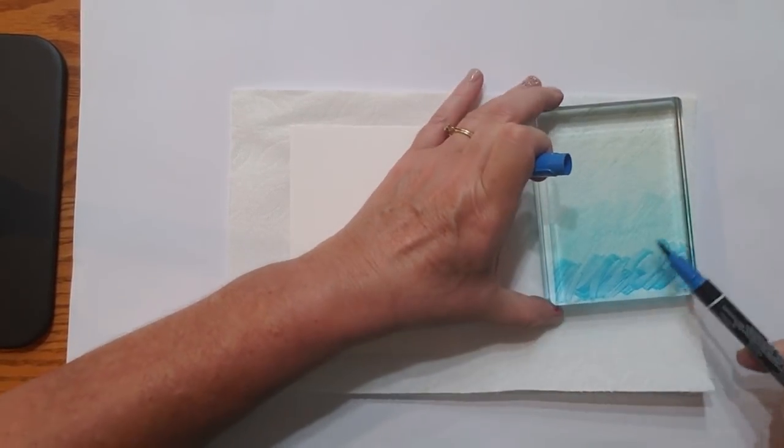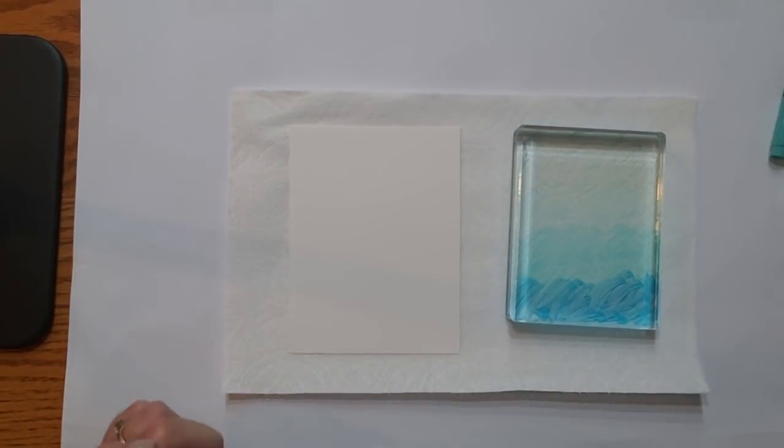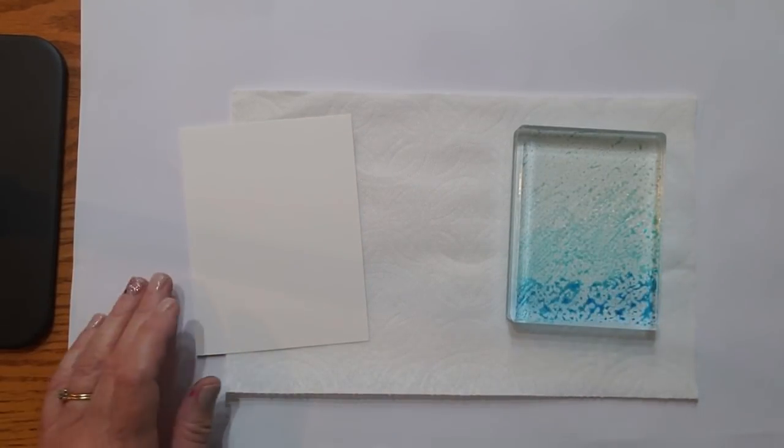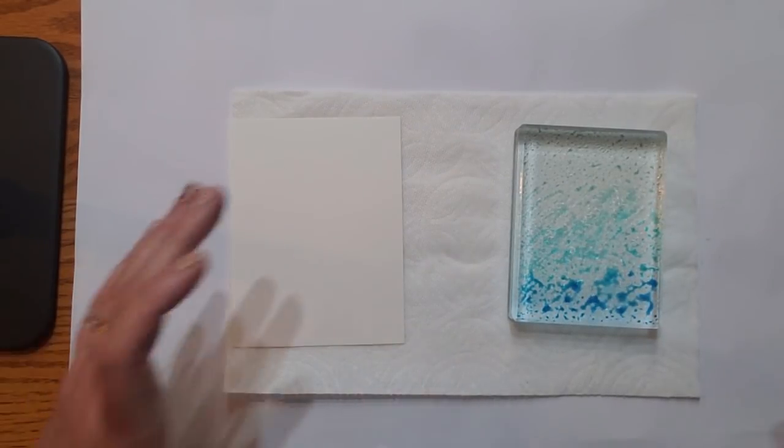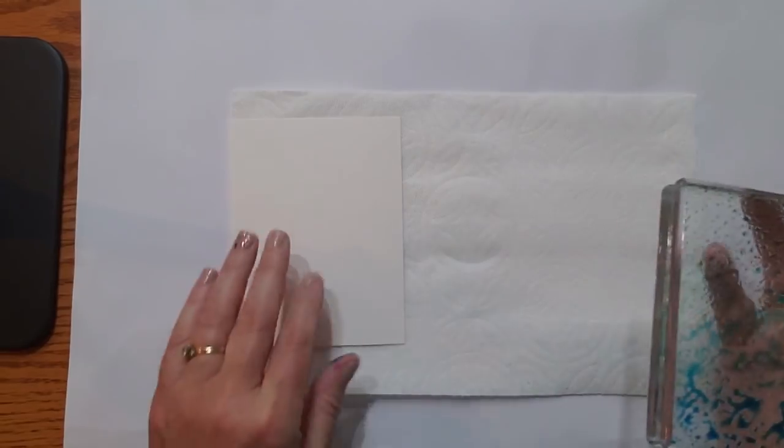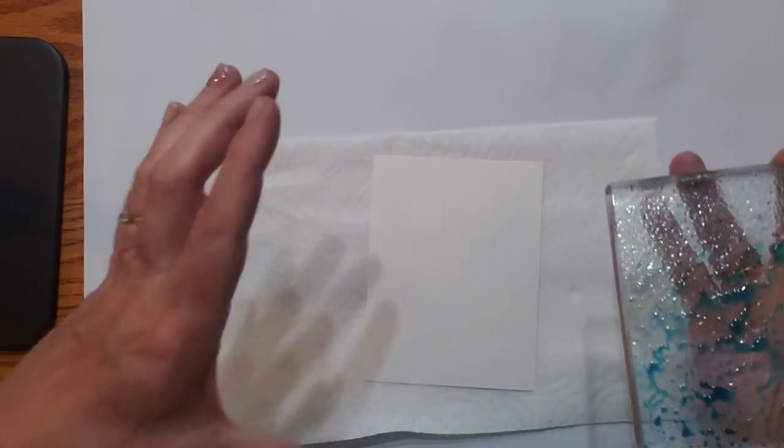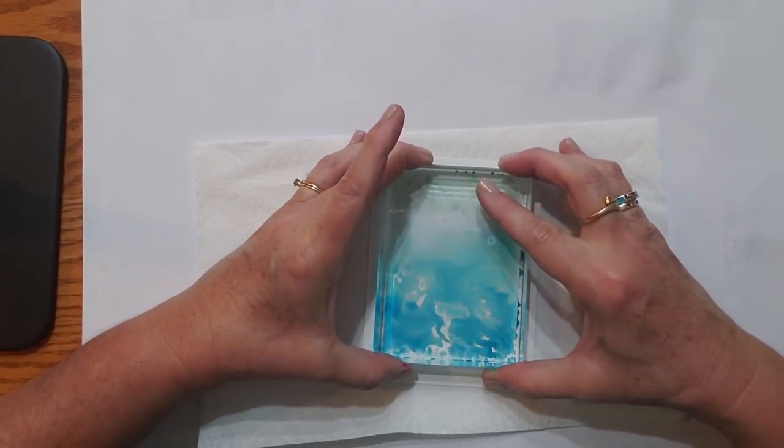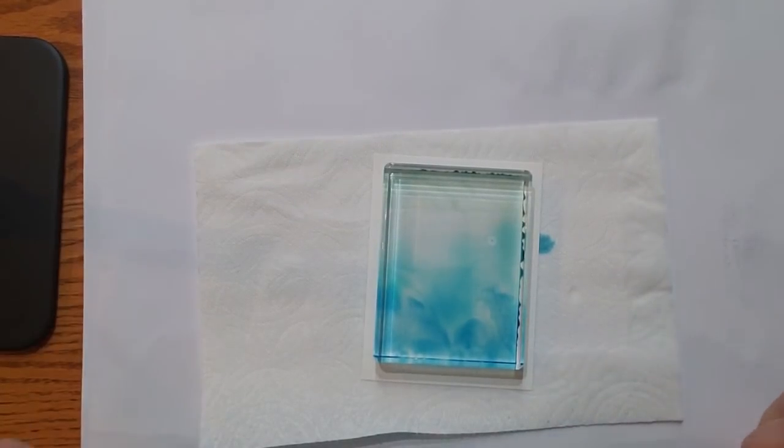So once I get that colored in the way I want it, then I'm going to take my Stampin' Mist and this has just water in it. And I'm going to mist that background and I'm going to give it a decent amount because I want it to pool under the block when I press it down. You can mix it a little if you want to, but it does it pretty well on its own once you turn it over. So I'm going to turn it over onto my paper and then I'm just going to push and let those colors kind of bleed together a little bit. Let it sit for just a minute until they soak in.